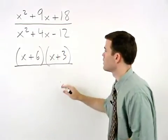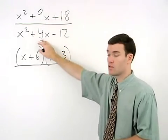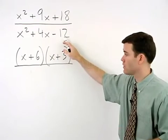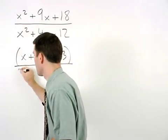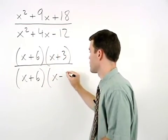In the denominator, we're looking for factors of negative 12 that add to positive 4, which are positive 6 and negative 2. So we have x plus 6 times x minus 2.